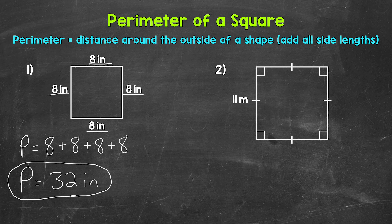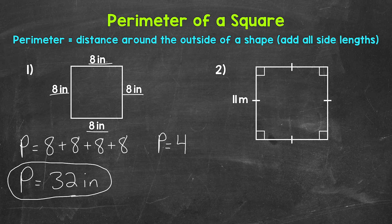Now I do want to mention, for squares, we can just multiply a side length by 4, since all of the sides are the same. Instead of 8 plus 8 plus 8 plus 8, we can just do 8 times 4 — we get the same thing either way. So we can use the formula: perimeter equals 4s, meaning 4 times a side length.